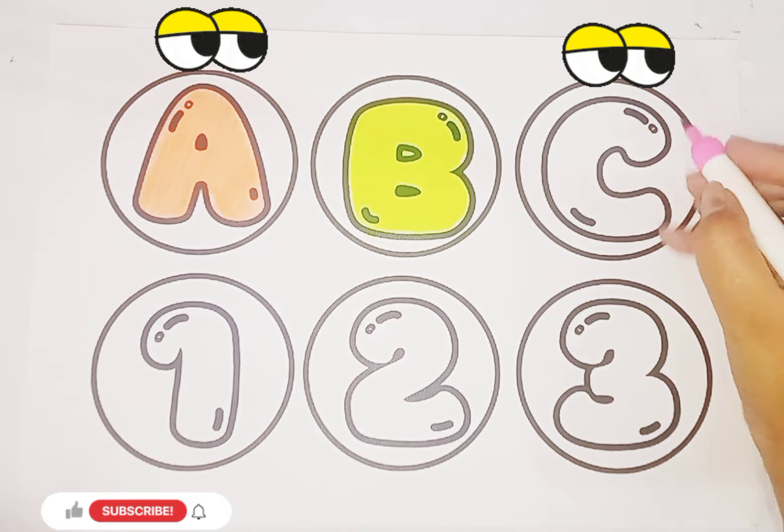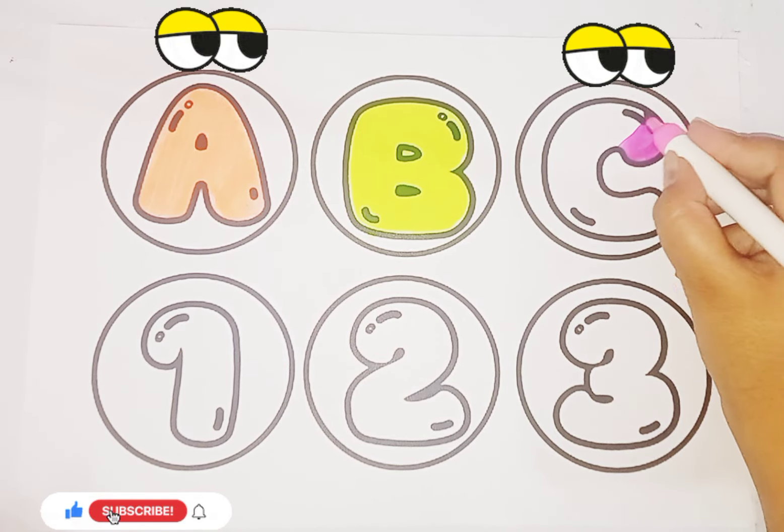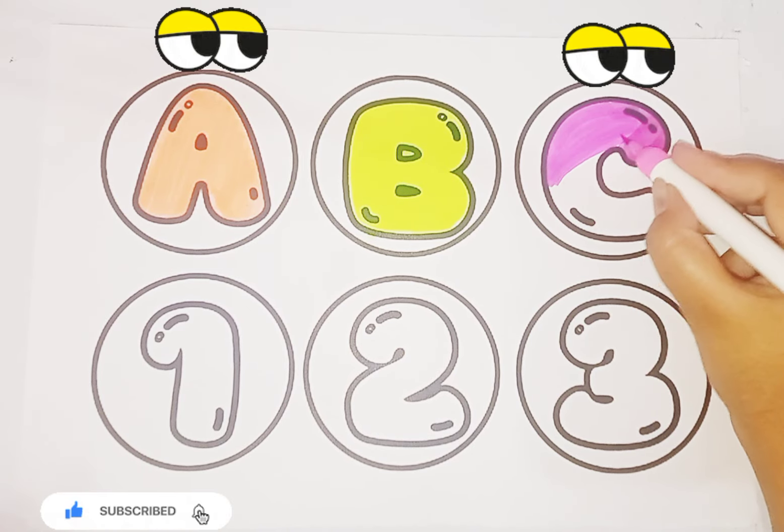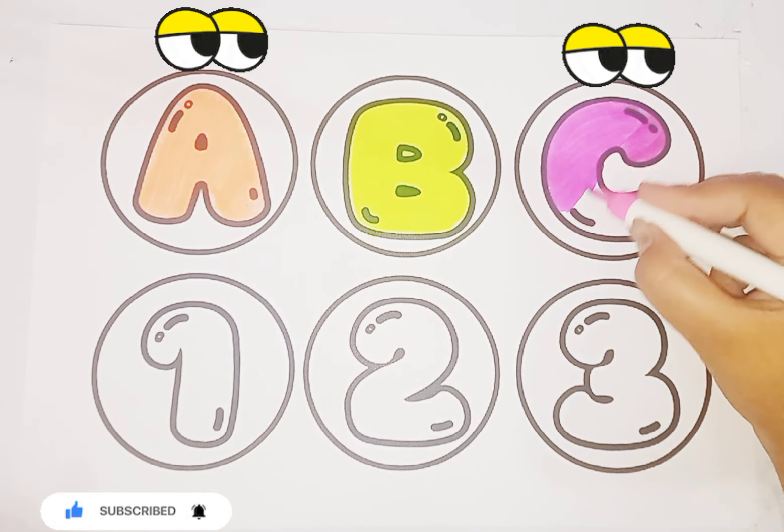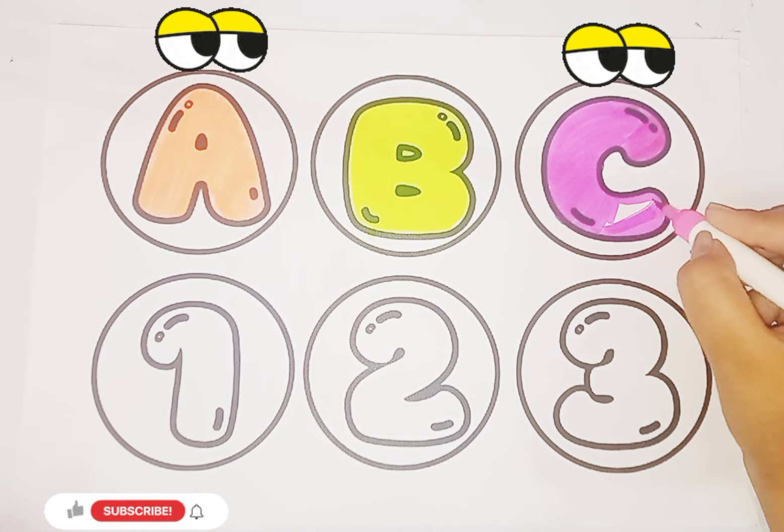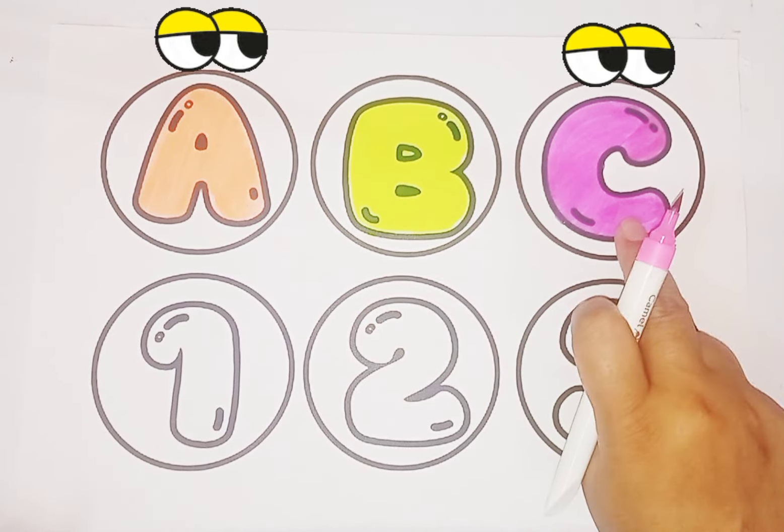Next we use pink color. Alphabet C. C is for cat. C is for cow. Alphabet C. C, A, B, C.